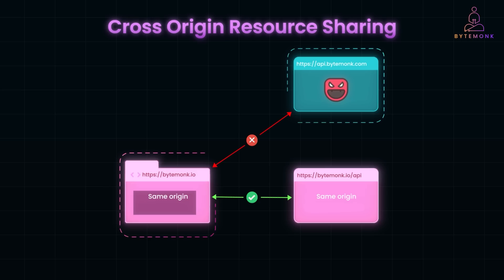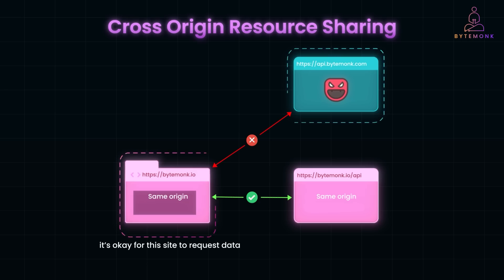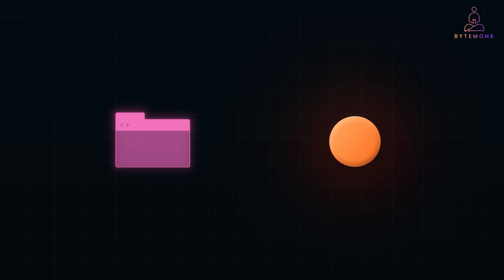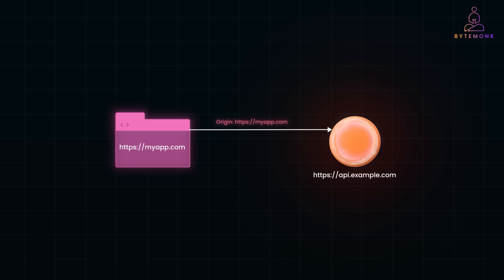This is where CORS, or Cross-Origin Resource Sharing, comes in. It's a way for servers to say, "hey, it's okay for this site to request data from me." CORS is all about HTTP headers that let your server allow or deny requests from different origins. When your browser makes a cross-origin request, the front-end — say https://myapp.com — makes a request to https://api.example.com, and the browser automatically adds an Origin header. The server then checks if it wants to allow requests from that origin.